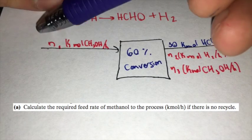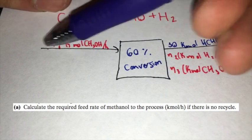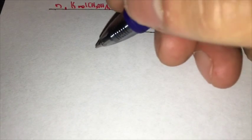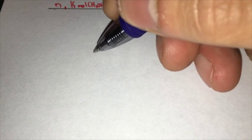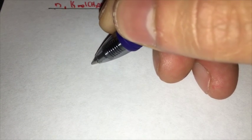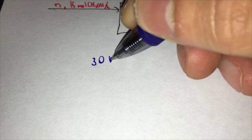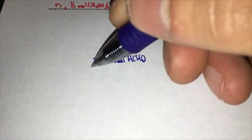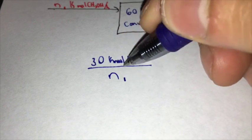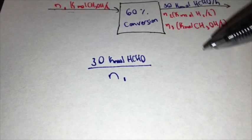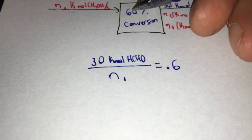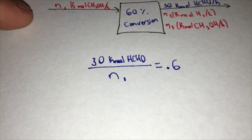So having that in mind, we can solve for N1, which is being fed, by simply doing our percent conversion of 30 kilomoles of HCHO going out over N1 going in, which is going to be equal to 0.6, so 60%. And if we solve for N1,